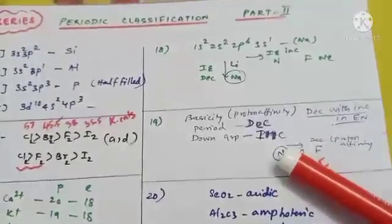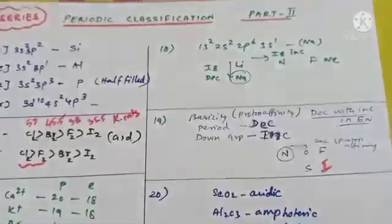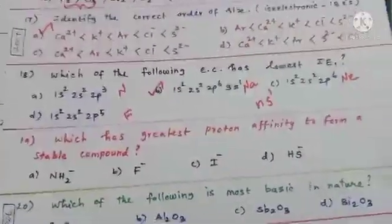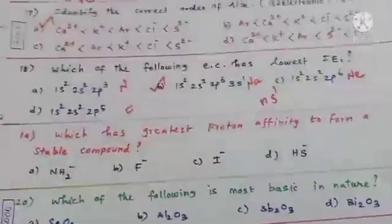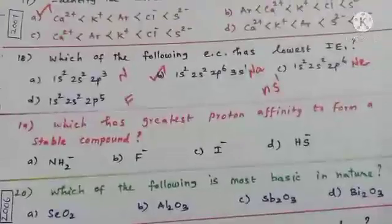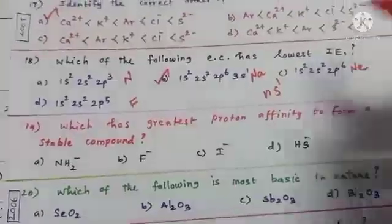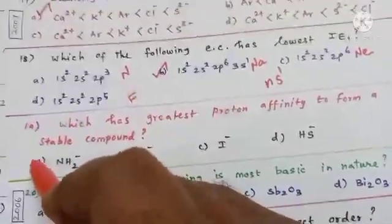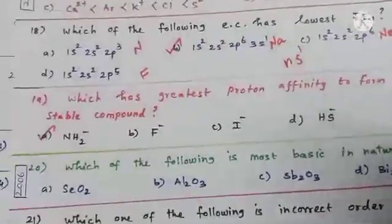Nitrogen has the highest proton affinity among nitrogen, oxygen, and fluorine. Among the given options — NH₂⁻, F⁻, I⁻, and HS⁻ — the NH₂⁻ species has the most affinity for a proton to form a stable compound.